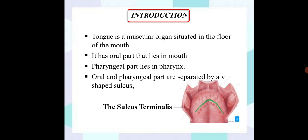While coming to the oral and the pharyngeal part, specifically these two are separated by a V-shaped sulcus. As you can see here in diagram, that green color portion actually is V-shaped sulcus and it is the sulcus terminalis.